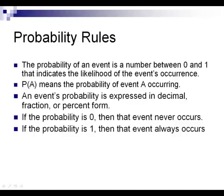The probability of an event occurring is a number between 0 and 1, and it indicates the likelihood of that event occurring. P(A) means the probability of event A occurring. The probability can be expressed in decimal form, fraction form, or percent form — any of those are fine. If the probability is 0, the event is never going to occur — a 0% chance. If the probability is 1, the event will always occur — that means a 100% chance.